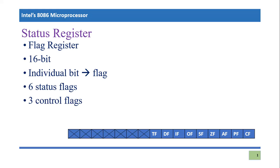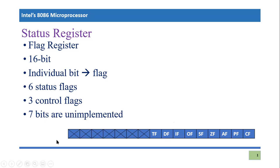There are also three control flags. That means out of 16 flags, six are status flags and three are control flags. Control flags have a certain control mechanism — we can actually control various things of the 8086 microprocessor using these three control flags. Six plus three equals nine, but out of 16 there are still seven bits that are not implemented and not used. So only nine flags are used in the flag register or status register.